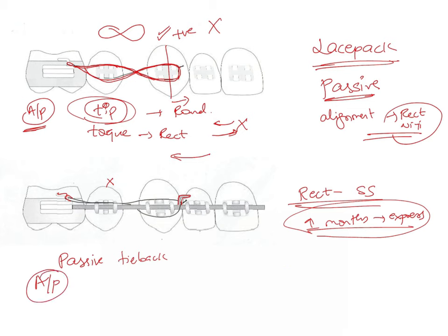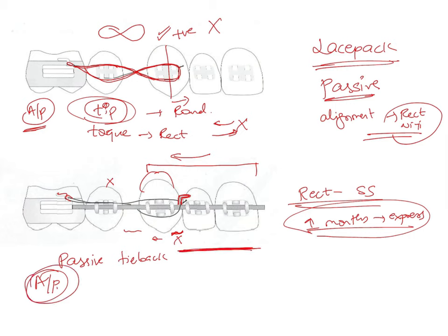The passive tie back is given for anterior-posterior control of the anterior segment to prevent anchorage loss. We don't engage the canine crown because engaging individual teeth can cause distalization of the canine, opening up space between the canine and the lateral incisor — which is undesirable since we retract the anterior segment as a whole. Instead, the tie back is placed on the posted arch hook, providing anchorage to the entire anterior segment while maintaining anterior-posterior control.